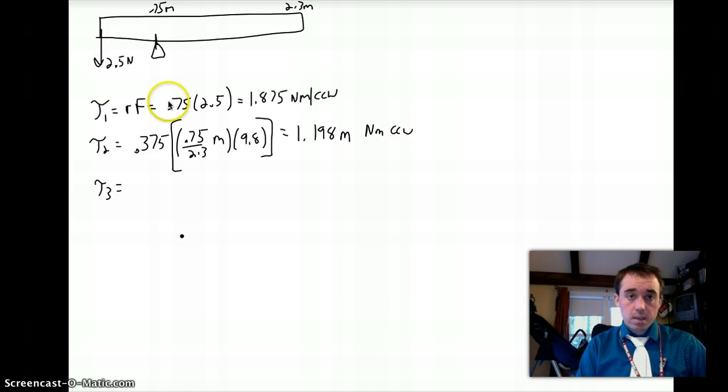Torque 3 is, my distance is 2.3 minus 0.75, which is 1.55, but I have to use half that distance because there's 1.55 meters from here to here. But I only want to use half that distance, so that's 0.775. 0.775 meters, that's my R.